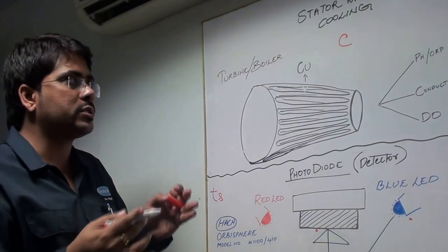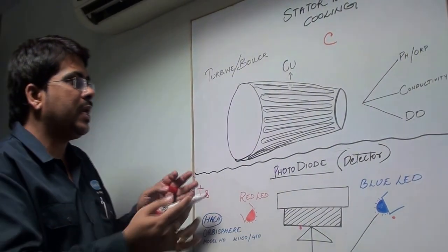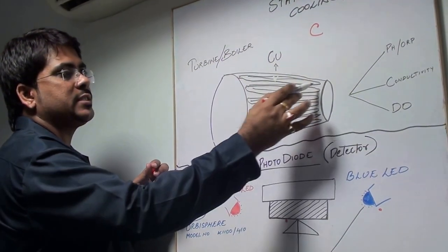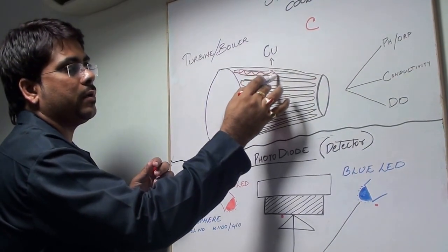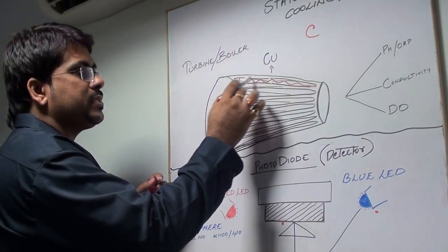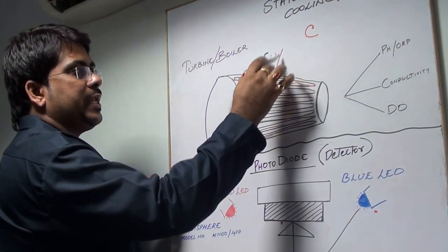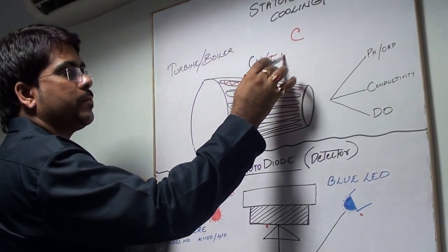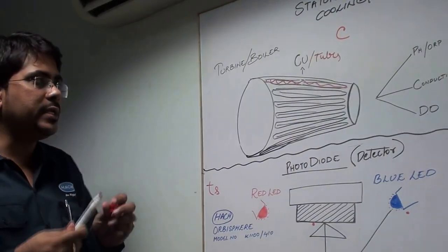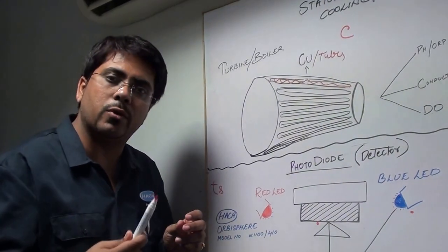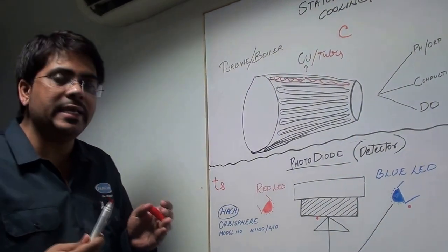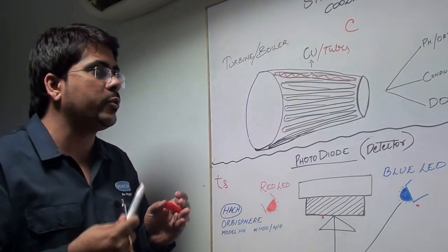When we talk about stator windings in the boiler drum, there are different types of copper strandings, as you can see in this diagram. These copper strandings or copper tubes carry the main water. This water needs to be highly pure, almost ultra-pure in nature, without any type of contamination.